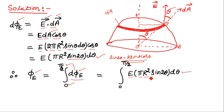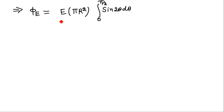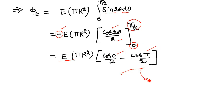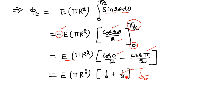E, π, and R² are constant quantities, so they are taken outside the integral. The integration of sin2θ dθ equals −cos2θ/2. Since there is a negative sign, we insert the lower limit first and the upper limit later so the negative sign is absorbed. Putting in cos0 and cosπ, each term gives one-half, summing to 1. The total electric flux calculated without using Gauss's law is πR²E.